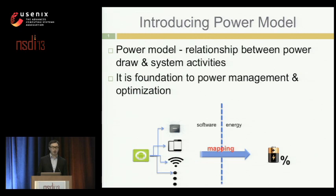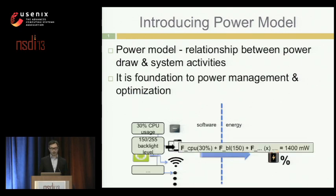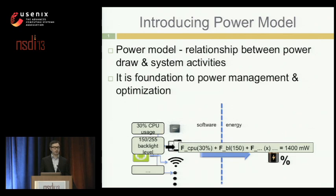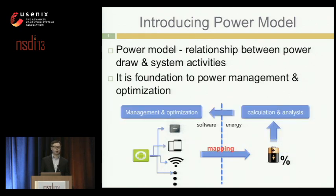What is the power model? A power model is basically the relationship between power consumption and system activities. To give a concrete example: if we have a snapshot of system activity — 30% CPU usage, a screen backlight level of 150, and other information about different hardware components — we put those into a function and can get a calculation, for example 1,400 milliwatts.